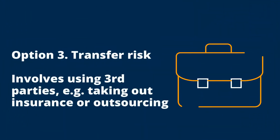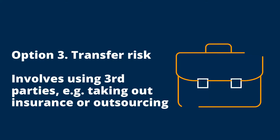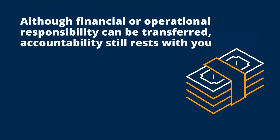The third risk treatment option is to transfer the risk. This involves the use of third parties to help you mitigate your risks — for example, by offloading some of the financial impact by taking out an insurance policy, or by outsourcing the responsibility for implementing and operating technical controls to a third party such as an IT managed service provider. It is important to note that although responsibility for financial impact or management of operational controls can be transferred, the accountability associated with the risk cannot — you will still be held accountable by your stakeholders if something goes wrong.